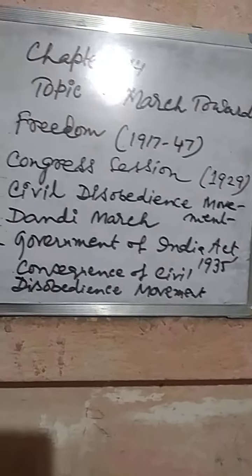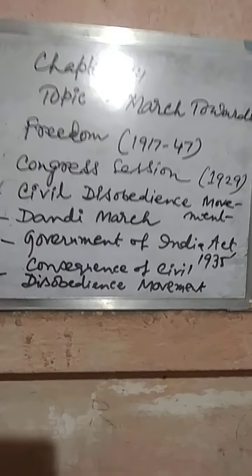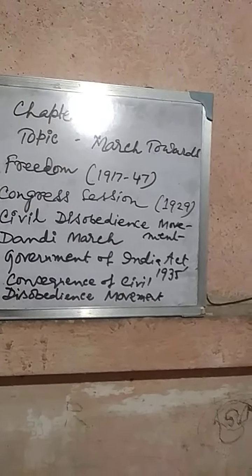The first point is the Congress session of 1929. In the year 1929, a session was held at Lahore with Pandit Jawaharlal Nehru as the president. The session adopted a resolution on 26th January 1930.